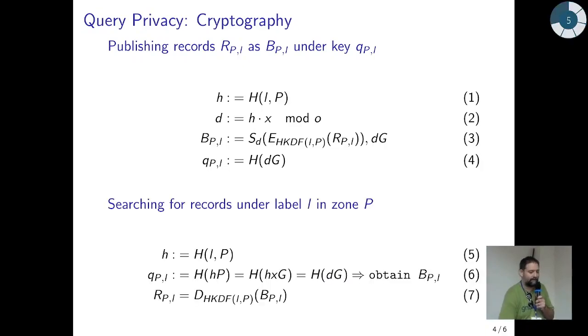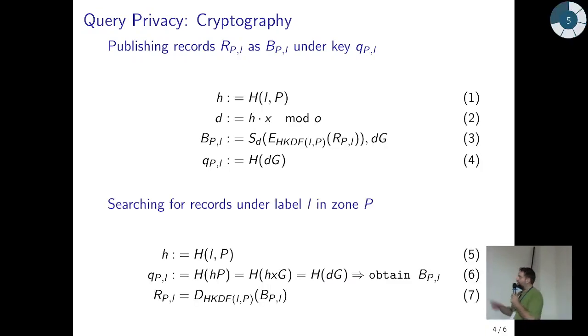With this, somebody who wants to search under label l in zone P can compute small h, multiply small h with the public key P, which will be the same as h×G, which is the same as H of dG. So they get the same query. They can get the records and decrypt them. The server does not learn what the question was, in which zone you queried for which label, or what the answer was. So you've got a form of scalable private information retrieval that allows you to look up names on the internet without disclosing to the authorities or name servers what you're actually asking for.